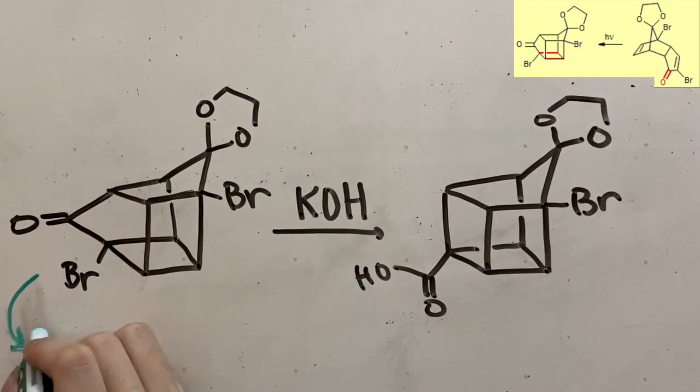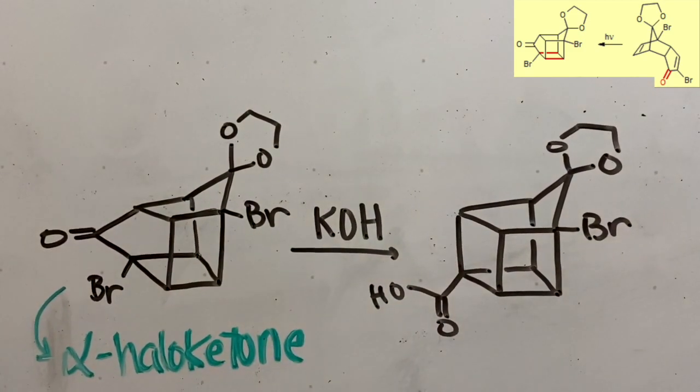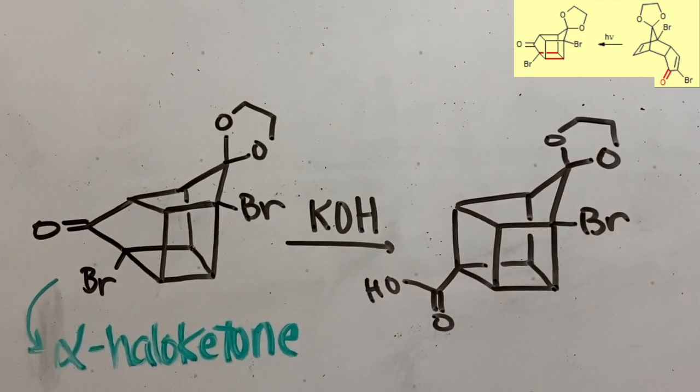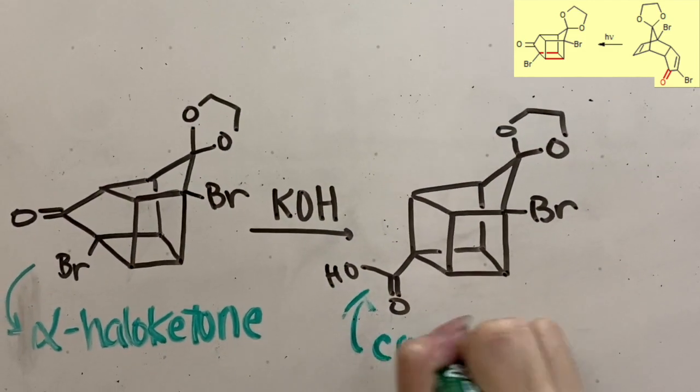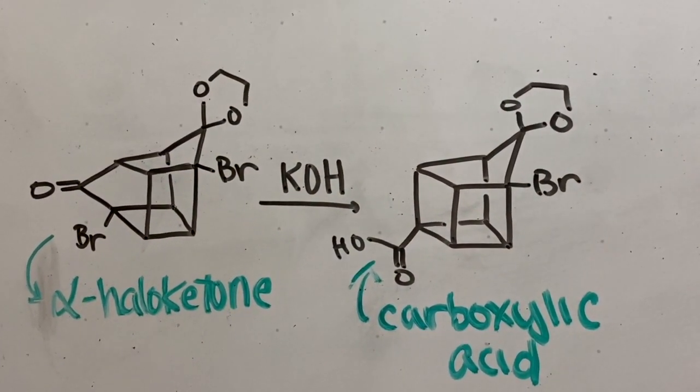Now in this synthesis, the alpha-halo ketone here and this bromide are rearranged with the help of a base, potassium hydroxide, to form a carboxylic acid on the carbon that was bonded to the bromide.